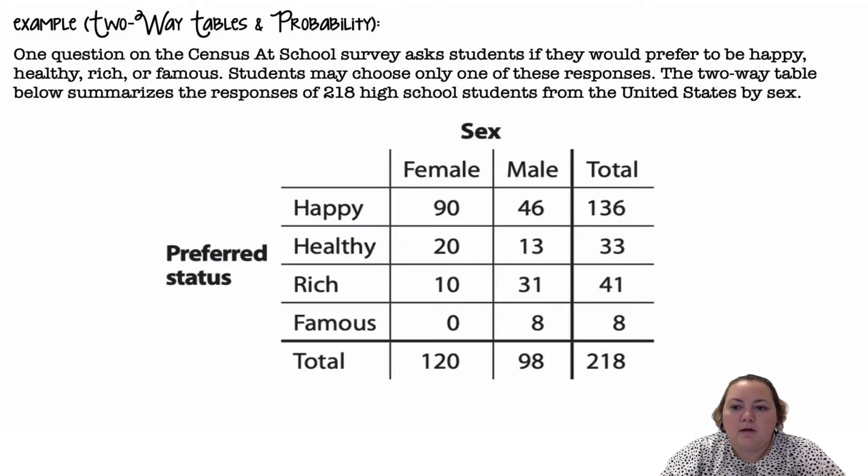The two-way table below summarizes the responses of 218 high school students from the United States by sex. So we have males and females and then their preferred status: happy, healthy, rich, or famous.